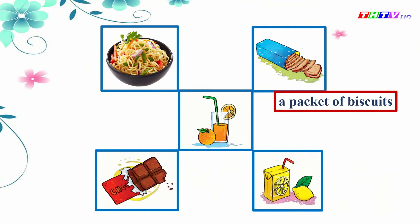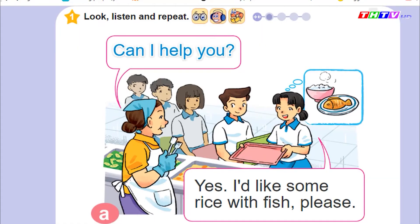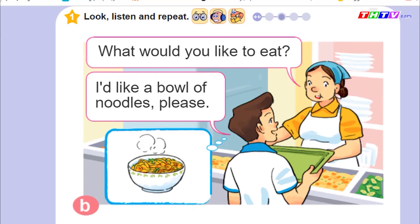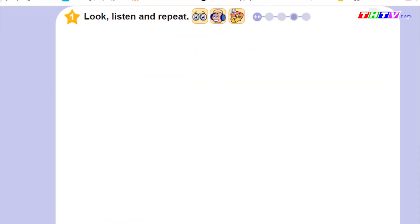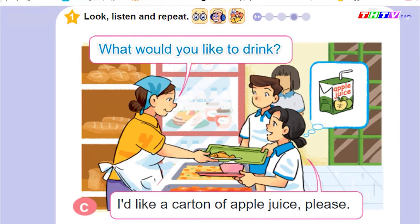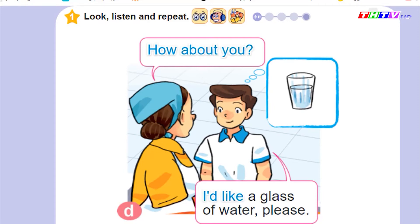Let's move to the story. Look at the picture. Who are they? Yes, they are Mai and Nam. Where are they? They are at the school canteen. They are ordering food and drink for their lunch. Let's listen. Can I help you? Yes, I'd like some rice with fish, please. What would you like to eat? I'd like a bowl of noodles, please. What would you like to drink? I'd like a carton of apple juice, please. How about you? I'd like a glass of water, please.